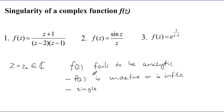For example, number one here, f(z), we've got z equals 2 and z equals 1 being singularities. And number two here, z equals 0 is a singularity because the function is undefined.